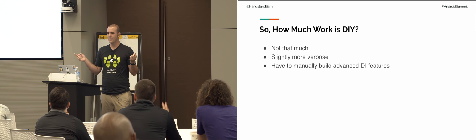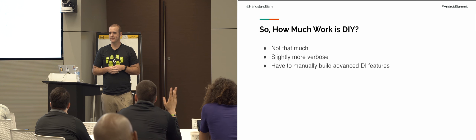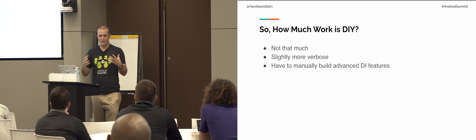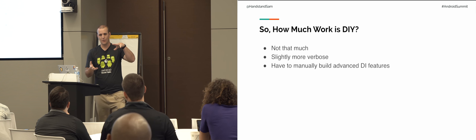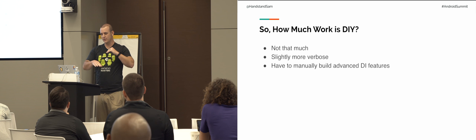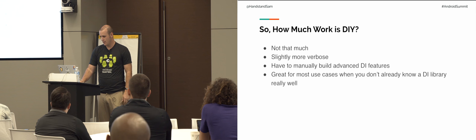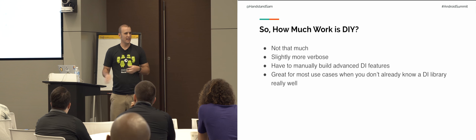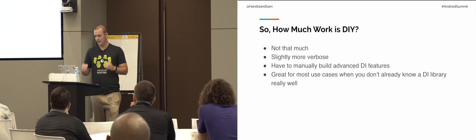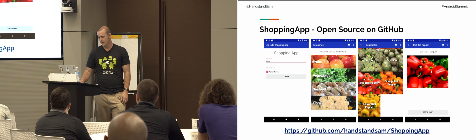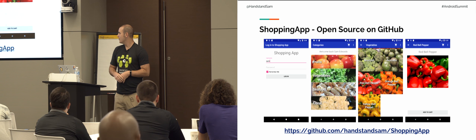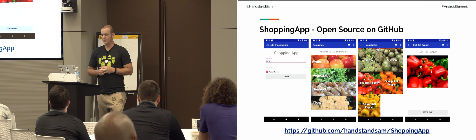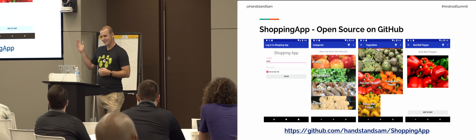If there are advanced dependency injection features, you have to deal with those yourself. For example, scoping — if you need activity-scoped things, you can do it with a factory: create it on onCreate and destroy it on onDestroy. It's something you can very much do with this pattern. This is great for really most use cases. If you don't already know a library very well, consider this approach. If you know a library in and out, use your library — it's your tool set. Be pragmatic.